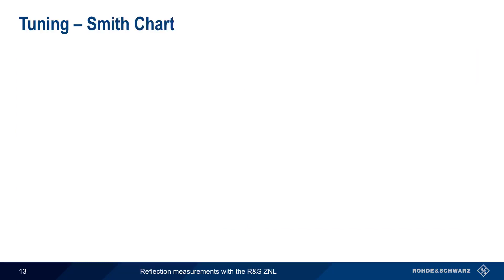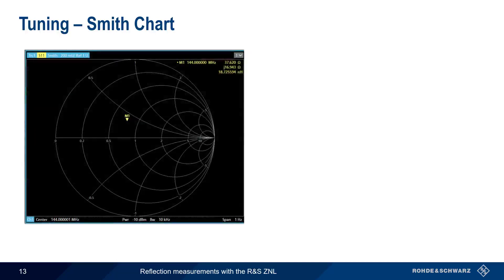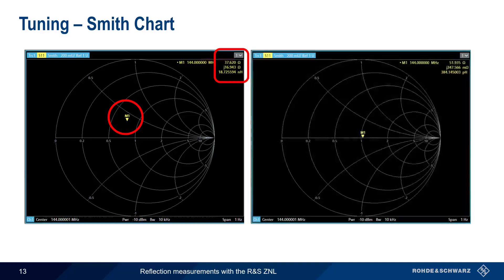Recall that SWR only tells us the degree of mismatch, not the nature of the mismatch. We can use the Smith chart display on the ZNL to see our antenna or load impedance as a complex value — in this case lying in the inductive upper half of the chart. Again, using our tuner, we can move our complex impedance fairly close to the center of the Smith chart, which corresponds to a perfect match, or an SWR of 1.